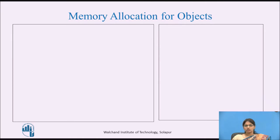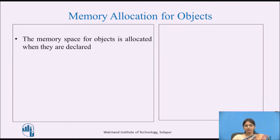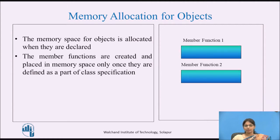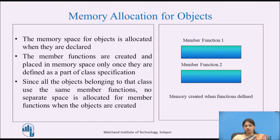Let us see the memory allocation for objects. Usually, the memory space for objects is allocated when they are declared for a particular class. The member functions are created and placed in memory space only once when they are defined as part of the class specification. So consider two member functions, member function 1 and member function 2, for a particular class. The memory is allocated when the member functions are defined. Since all the objects belonging to that class use the same member functions, no separate space is allocated for member functions when the objects are created. That means these member functions will be common to all the objects.